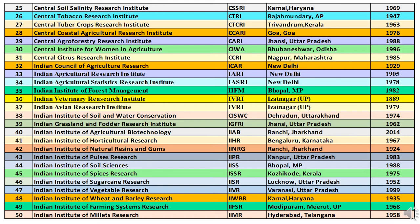Twenty-eighth is CCARI — Central Coastal Agriculture Research Institute — headquartered at Goa, started in 1976. Twenty-ninth is CARI — Central Agroforestry Research Institute — headquartered at Jhansi, Uttar Pradesh, established in 1988. Thirtieth is CIWA — Central Institute for Women in Agriculture — headquartered at Bhubaneswar, Odisha, started in 1996. Thirty-first is CCRI — Central Citrus Research Institute — headquartered at Nagpur, Maharashtra, 1985. Thirty-second is ICAR — Indian Council of Agricultural Research — headquartered at New Delhi, started in 1929. Thirty-third is IARI — Indian Agricultural Research Institute — headquartered at New Delhi, started in 1982.